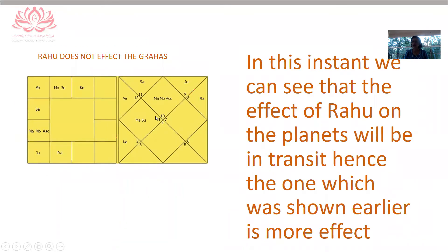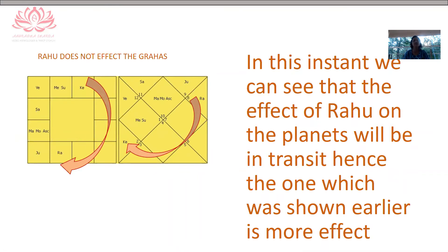In another case, Rahu has already passed all the planets, and for half a cycle it is not going to affect the planets. On the contrary, Rahu is going to have an effect on this chart only during the other half — during the transit. So this chart is not as effective as the chart shown earlier; it is not that effective in terms of Kalsarp Yoga as is the other chart.